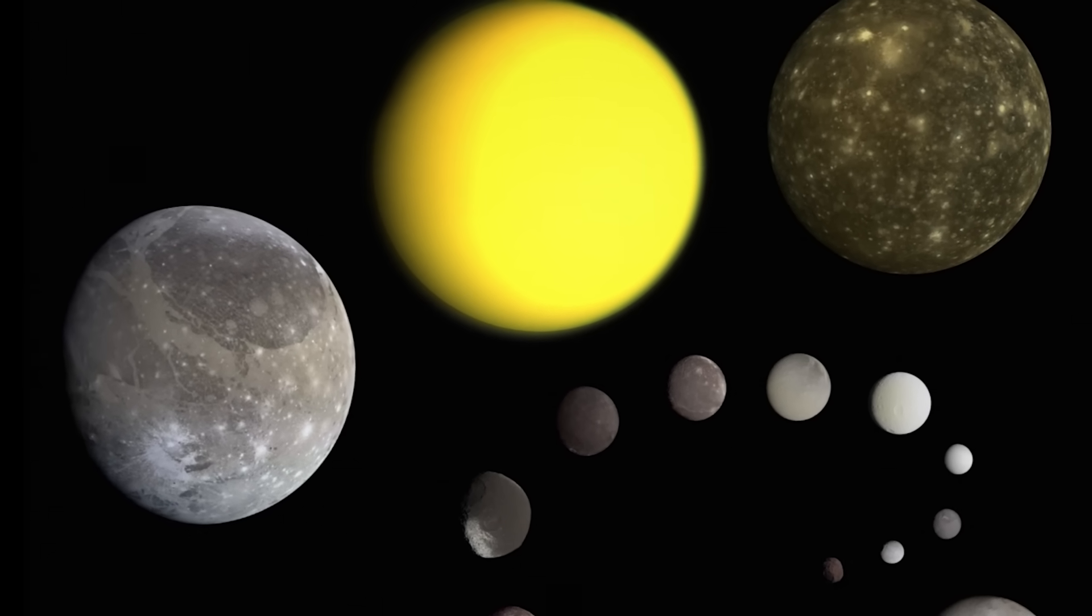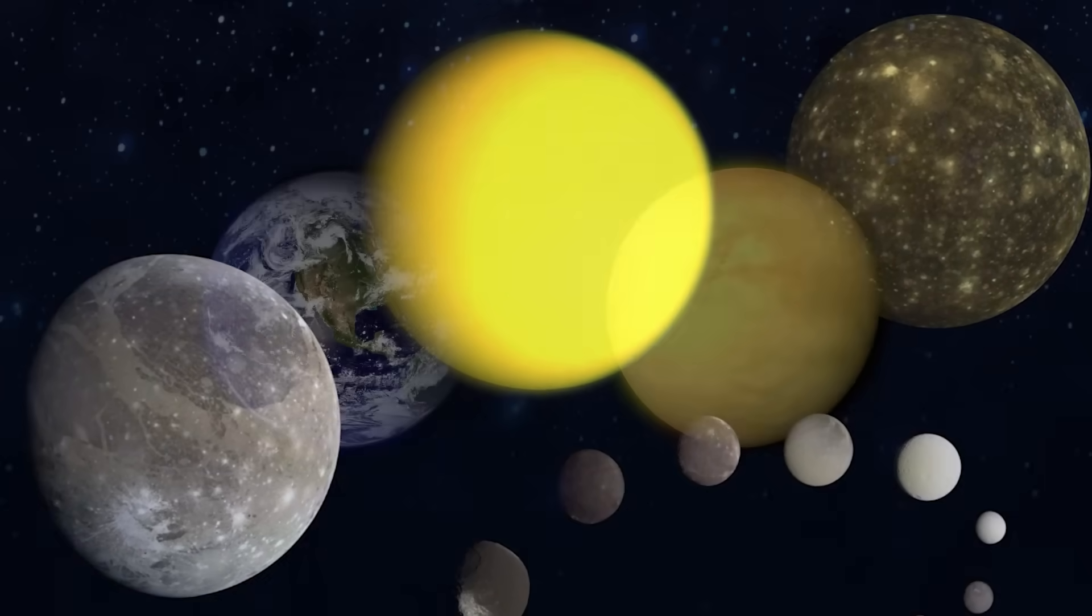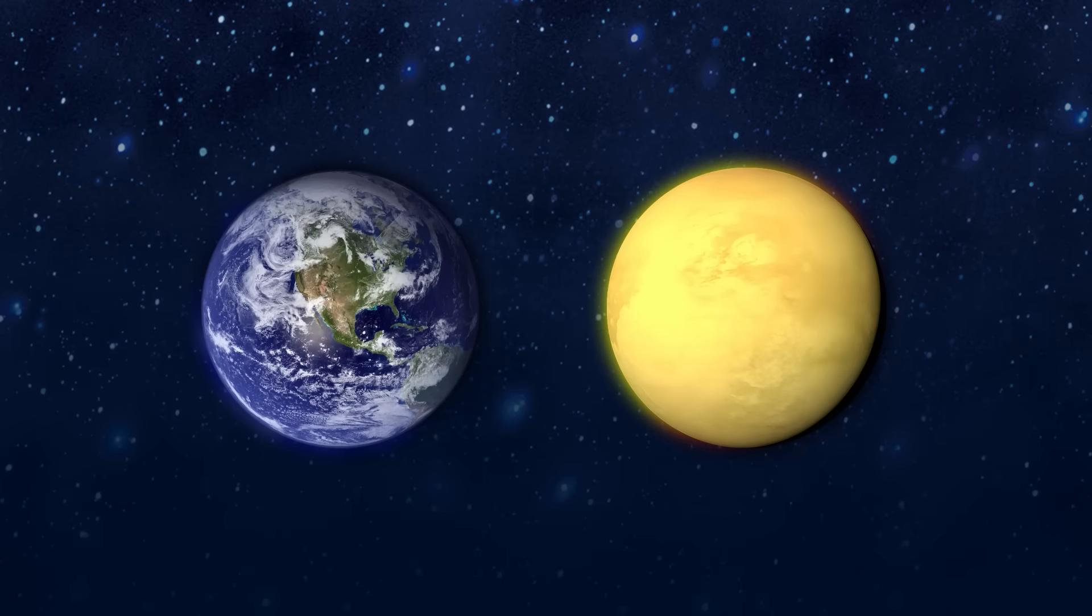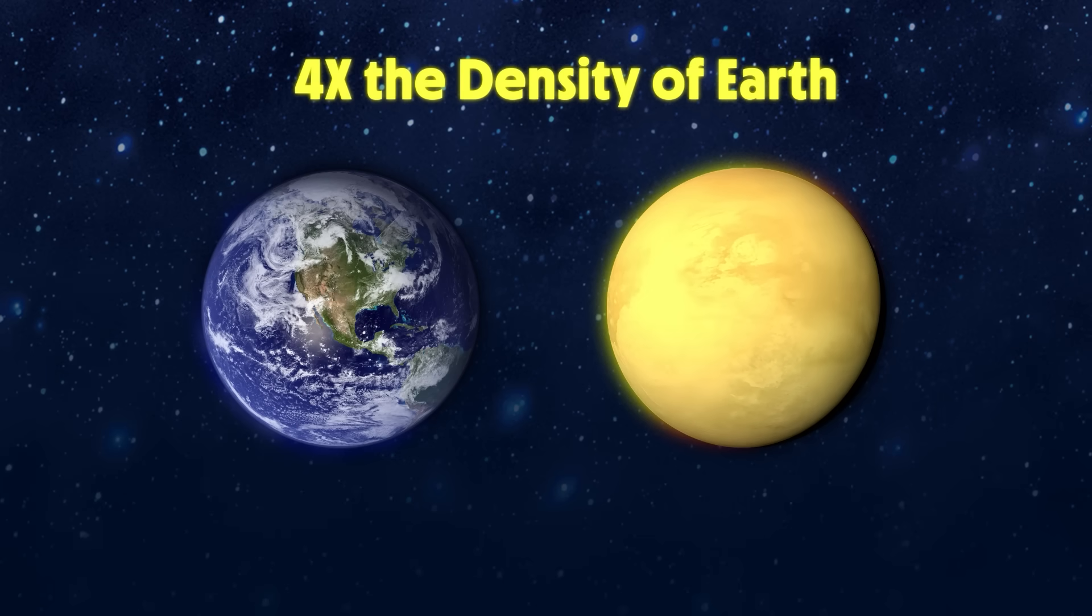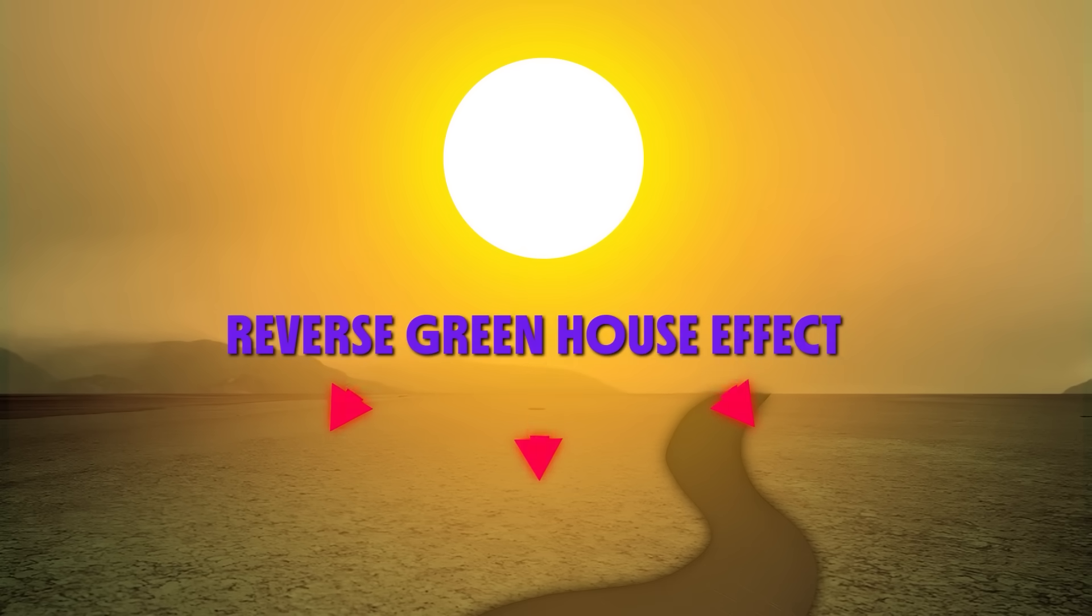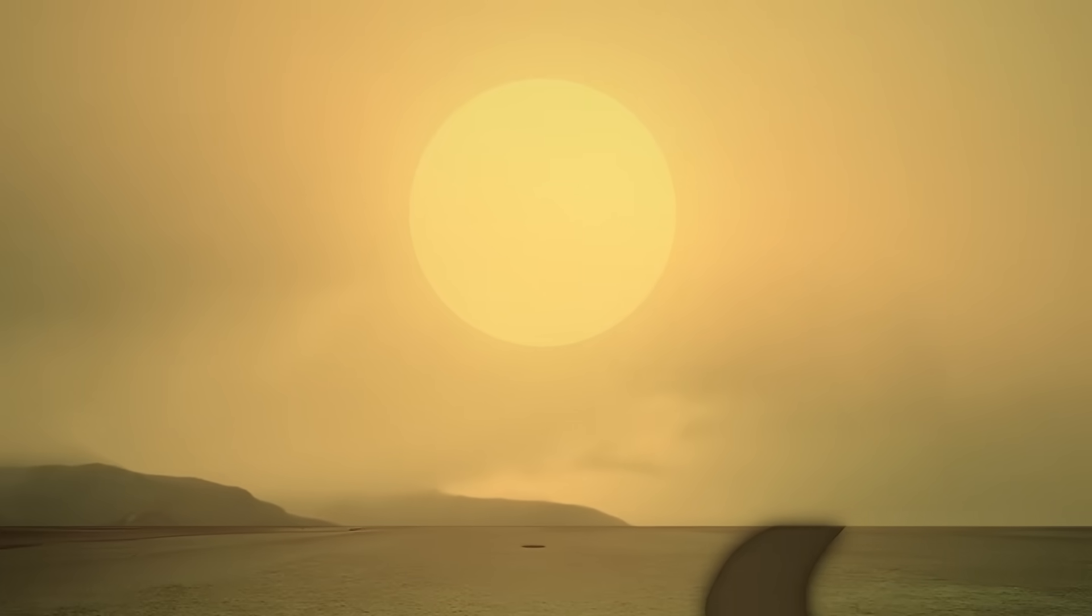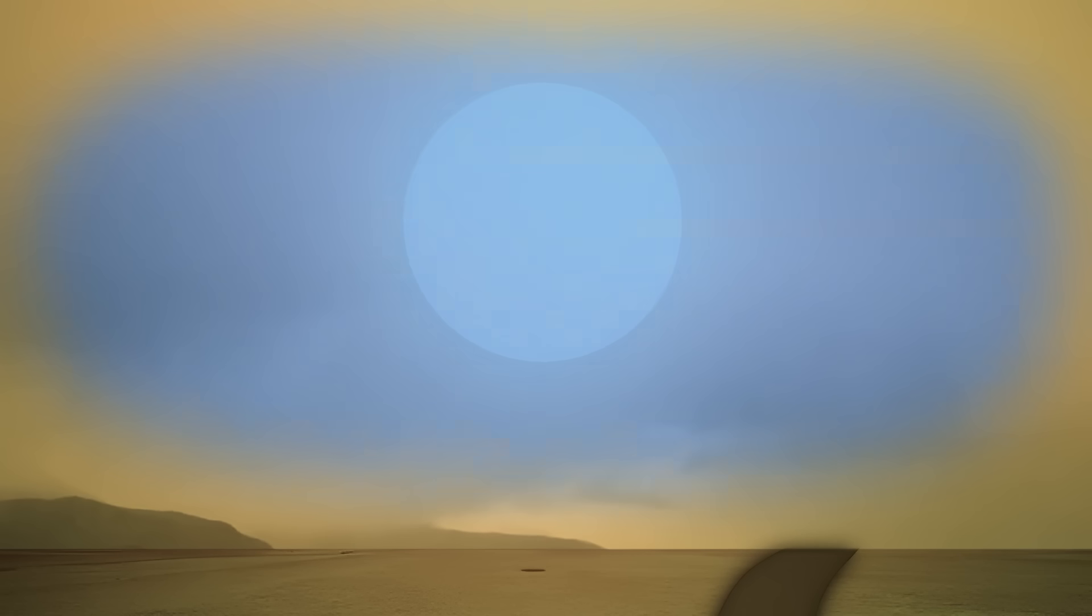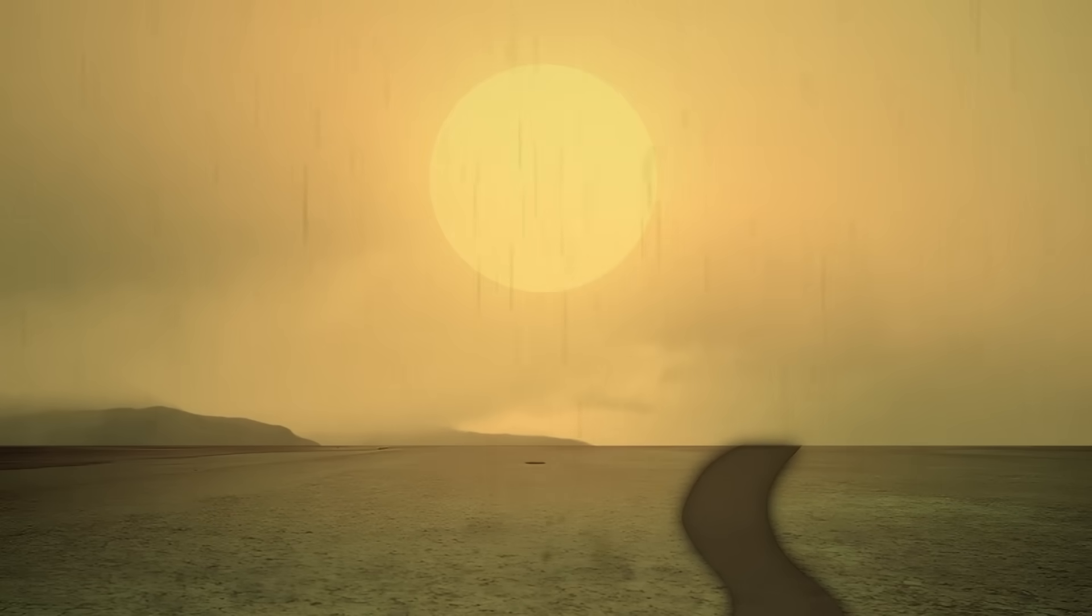Titan is the only moon in the solar system with an atmosphere, and this is a thick atmosphere, four times the density of Earth's. So what that does is it actually creates a reverse greenhouse effect, blocking out what little heat from the sun can actually reach this far. So as we move deeper towards the surface, all of the methane gas in the air gets colder and colder until it liquefies and falls like raindrops onto a surface of ice that is frozen as hard as granite rock.